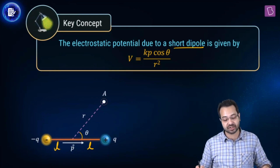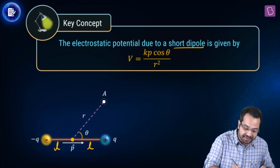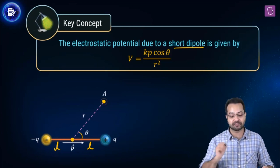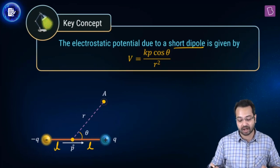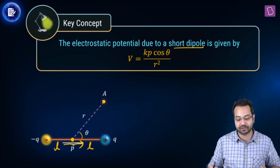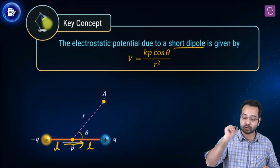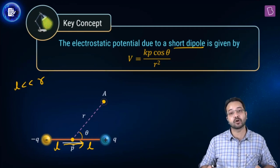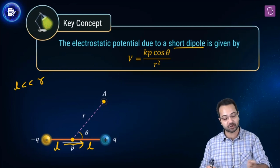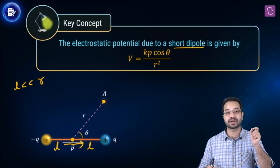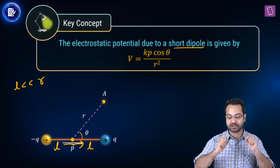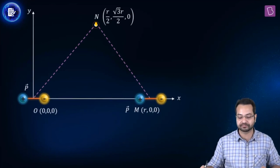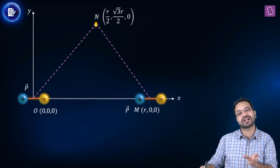This formula is only valid if L is much much less than R, meaning it is a short dipole. In this question we have short dipoles so we can use this formula. The potential at the point will be the sum of the potentials due to both dipoles. For the first dipole, the distance is measured from its center and θ is the angle that distance line makes with the dipole direction. For the second dipole at (R,0,0), similarly we find the distance r′ and angle θ′.